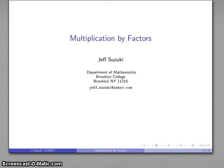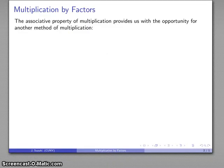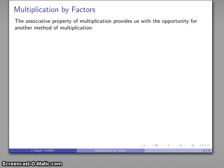And one of the easy places to start is what's called multiplication by factors. And the basic idea is the following. We rely on the associative property of multiplication, and that is to say that if I have three numbers a, b, and c, the product a times b times c, I can multiply a and b together first, then multiply by c,